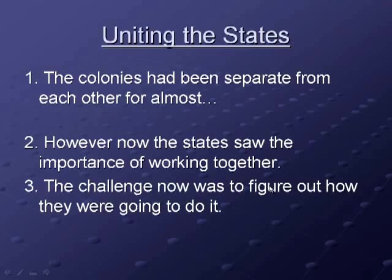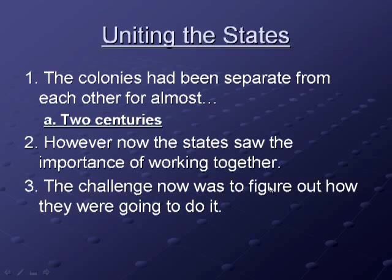Uniting the states: the colonies had been separate from each other for almost two centuries, accustomed to doing things on their own — their own money, laws, and customs. Now they needed to work together, and the challenge was figuring out how, and convincing people to unify under a strong central government. We'll see that they set up something, it doesn't work, and they have to go back to the drawing board. We'll go through that in the next few units as we cover setting up our government in the early years of the United States. That is Unit 5.